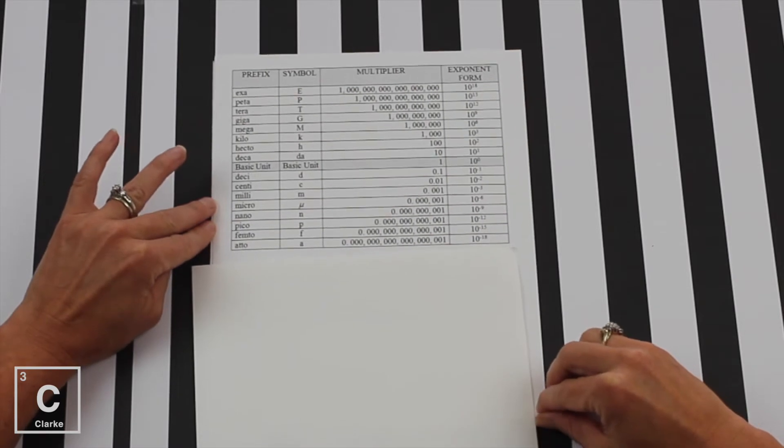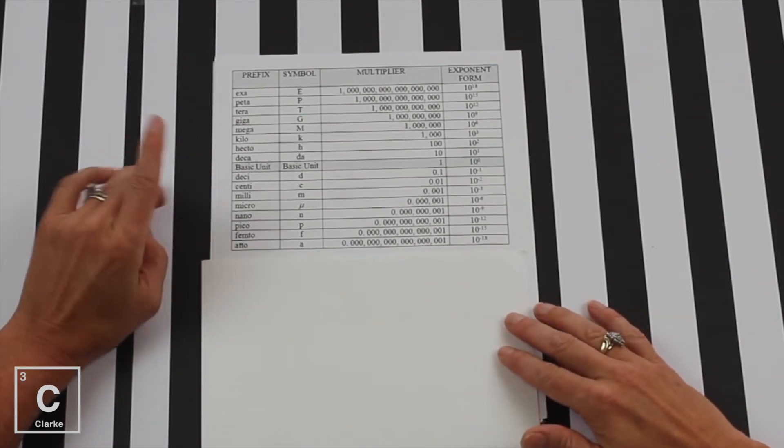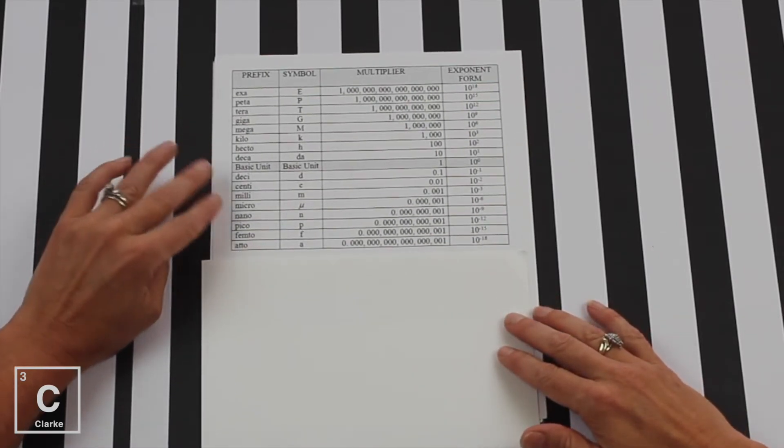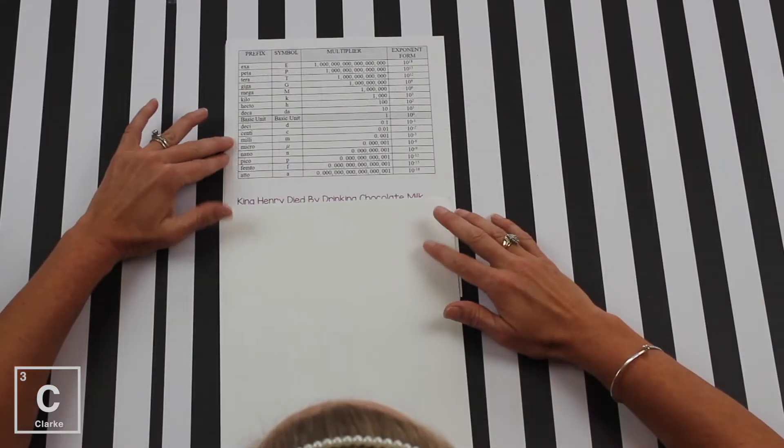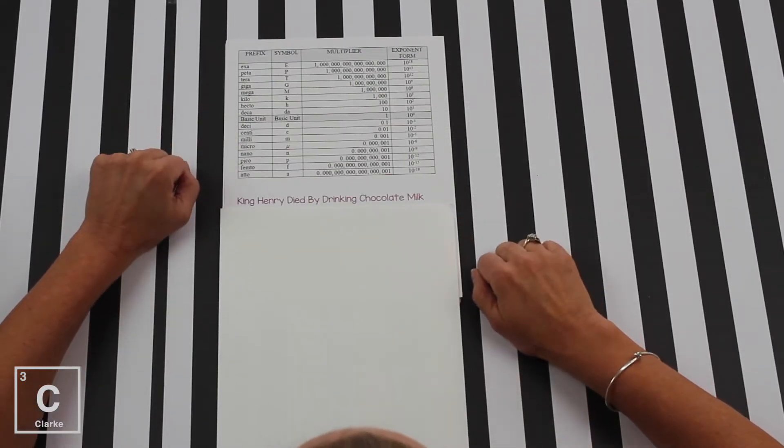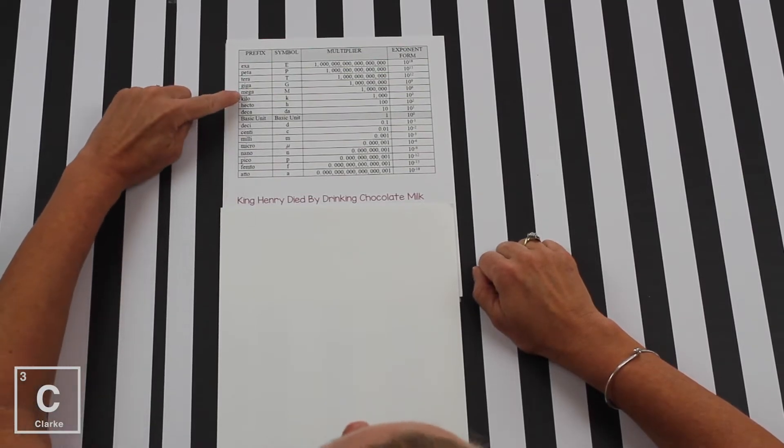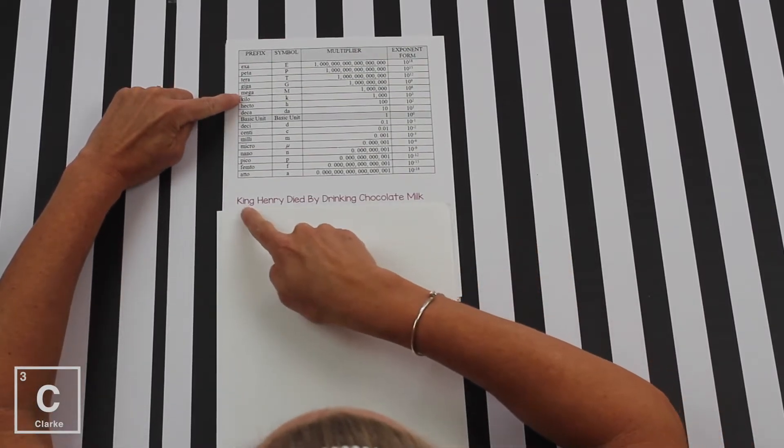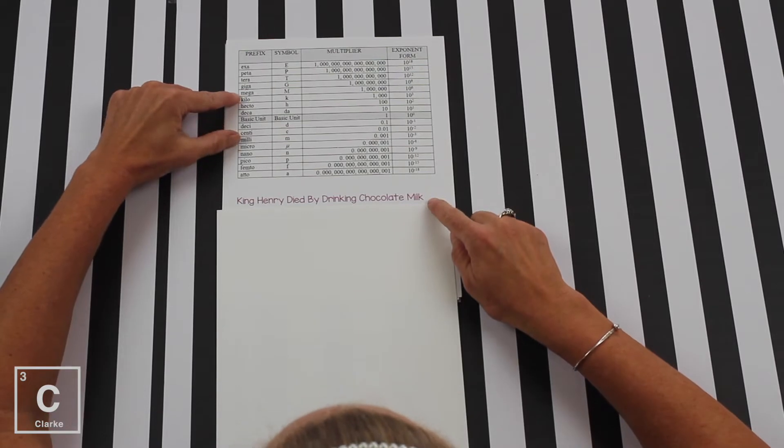Now, I'm hoping that once upon a time, you've learned the metric system and you had a little saying to help remember. And that mnemonic device was, King Henry died by drinking chocolate milk. The problem is, is that takes us from kilo, king, all the way to milk, which is milli.